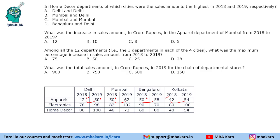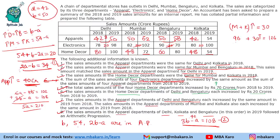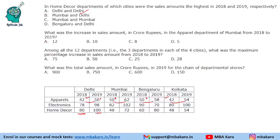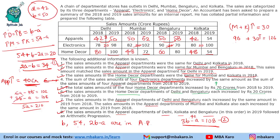Now let us answer the questions. Question 1: In which city were home decor sales the highest in 2018 and 2019? Looking at the home decor data, the highest in 2018 was Delhi and in 2019 was also Delhi. This could actually have been answered without fully filling the table, since Delhi's home decor value was clearly the largest, and it was figured out quite early in the set.